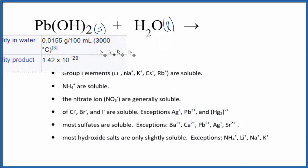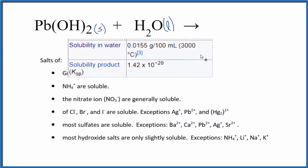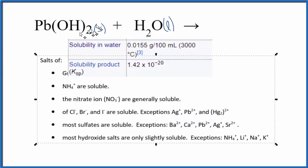We should note that things dissolve a little bit almost all the time. When we put the lead(II) hydroxide in water, just a little bit of it's going to dissolve: 0.0155 grams per 100 milliliters. And the solubility product, the Ksp, is 1.42 times 10 to the minus 20.